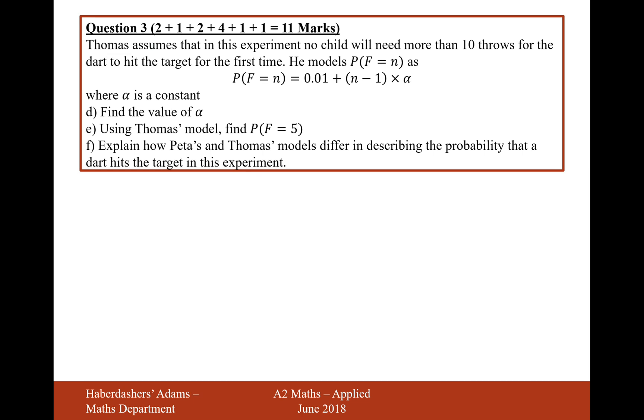Let's move on to the next part. Different person. Now, Thomas assumes that in his experiment, no child will need more than 10 throws for the dart to hit the target for the first time. He models the probability of F equals n, where n is the number of throws needed to hit the dartboard for the first time, as 0.01 add n minus 1 times alpha, where alpha is a constant. Find the value of alpha. Now, what might be potentially helpful here is to draw out a probability distribution for this probability experiment.